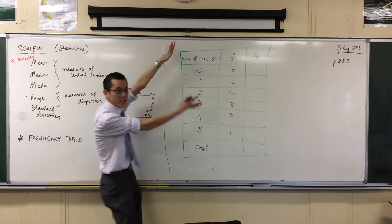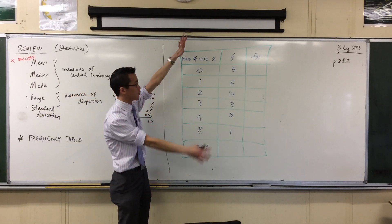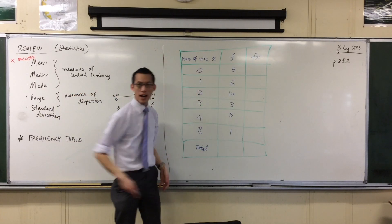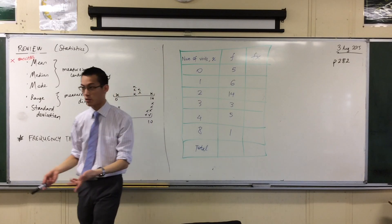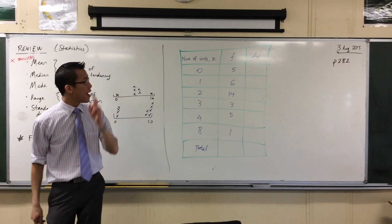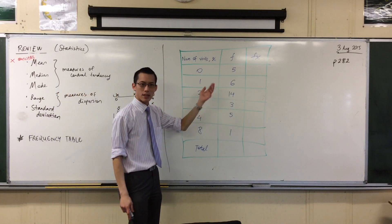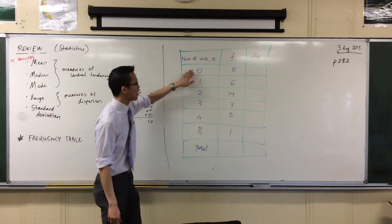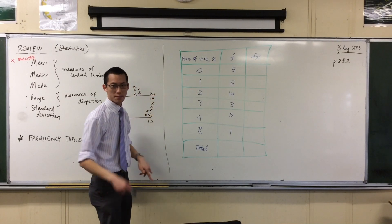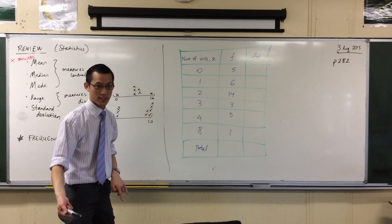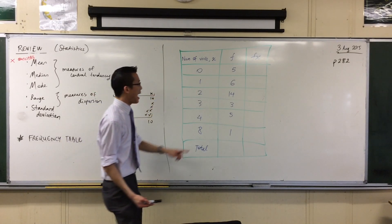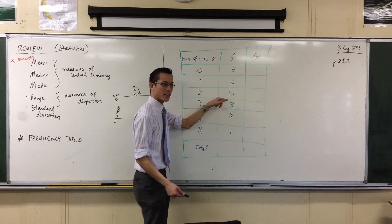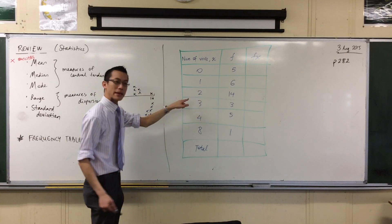So this is a frequency table. It's a table that tells you about a particular kind of data — in this case it's doctor's visits — and how frequently those things happen. These are different numbers of times that the doctor's been visited, and this is the number of people who've visited the doctor that many times.